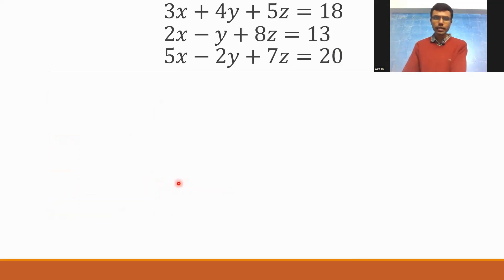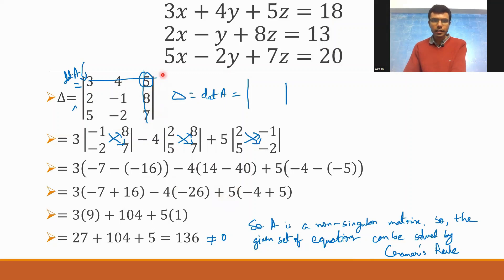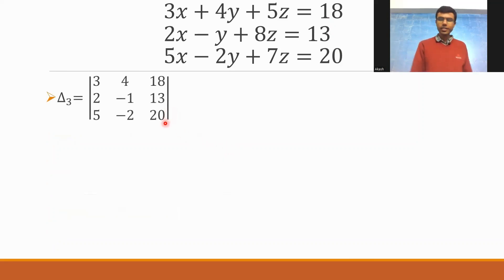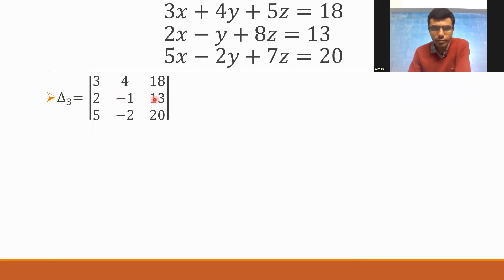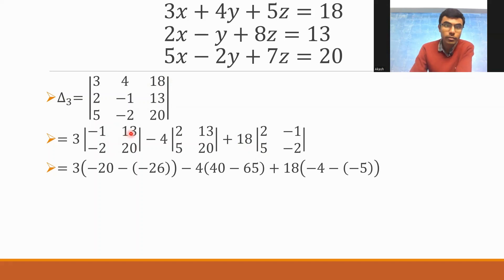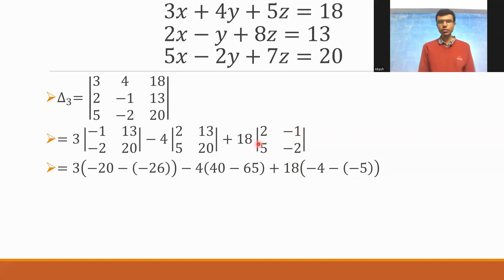For delta 3, replace the third column of delta with the elements of D — 18, 13, 20. Expanding: 3 into det[-1, 13; -2, 20], minus 4 into det[2, 13; 5, 20], plus 18 into det[2, -1; 5, -2]. This gives 3×(-1×20 minus -2×13), minus 4×(2×20 minus 5×13), plus 18×(2×(-2) minus 5×(-1)), which is 3×(-20 + 26), minus 4×(40 - 65), plus 18×(-4 + 5).